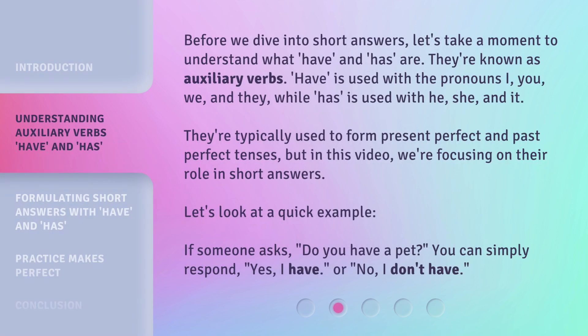Before we dive into short answers, let's take a moment to understand what have and has are. They're known as auxiliary verbs. Have is used with the pronouns I, you, we, and they, while has is used with he, she, and it. They're typically used to form present perfect and past perfect tenses, but in this video, we're focusing on their role in short answers. Let's look at a quick example.